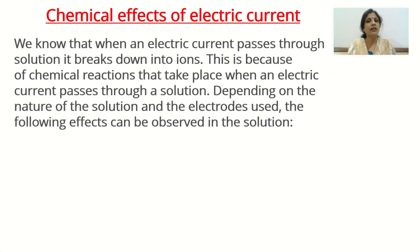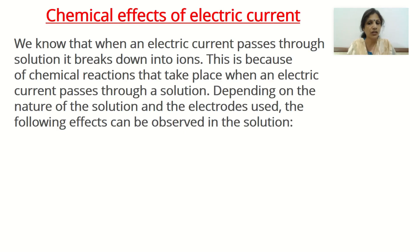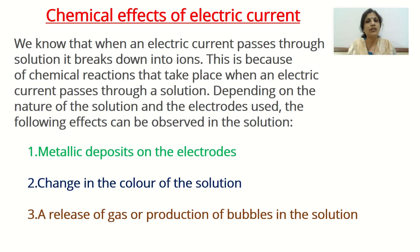The name of the chapter is Chemical Effect of Electric Current. When electric current passes through a solution, it breaks the solution down into ions. This happens because a chemical reaction takes place when electric current passes through the solution. Depending upon the nature of the solution and the electrodes used, we can observe: a metallic deposit on the electrode, a change in color of the solution, and release of gas or production of bubbles in the solution.